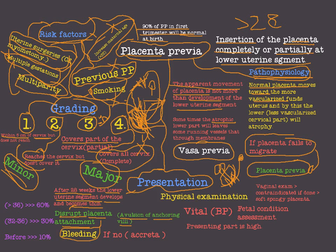Bleeding is the presenting symptom of placenta previa. Bleeding occurs after 36 weeks in 60% of cases, between 32 to 36 weeks in 30% of cases, and before 32 weeks in only 10% of cases. So the more advanced the gestational age, the more likely the bleeding in placenta previa.